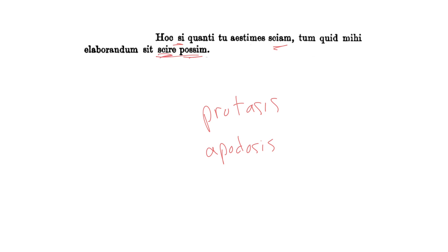The object of this scire is this clause: quid mihi elaborandum sit, which is an indirect question. Then I could know, scire possim, what ought to be tried or must be applied, how much labor, by me.